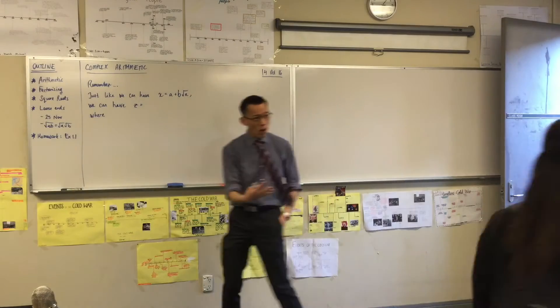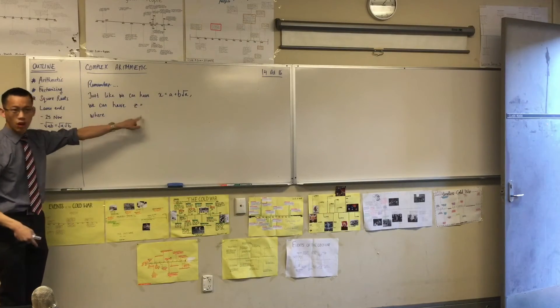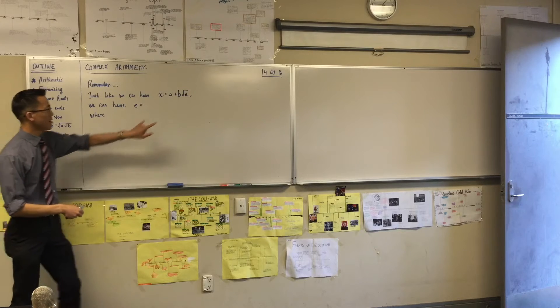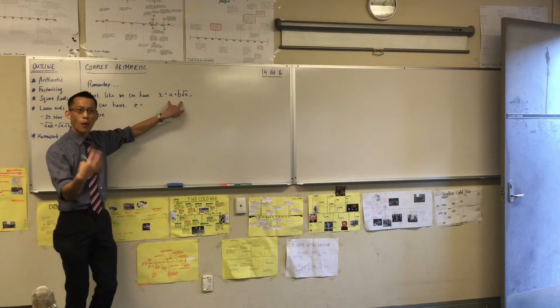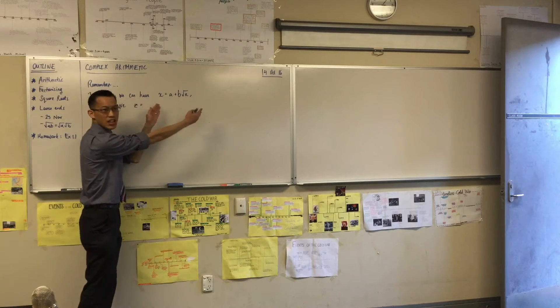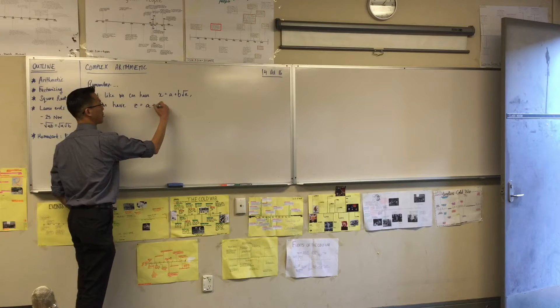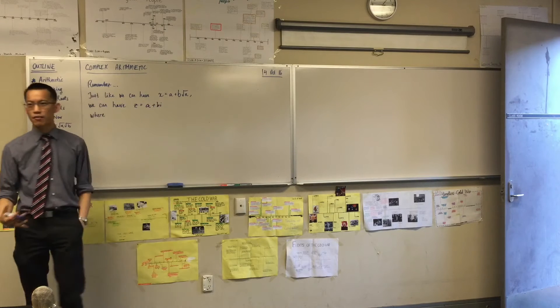And in the same way, just like with these irrational numbers, we can write complex numbers as this sort of, I call it like this oil and water mixture. Like these guys kind of stay separate, right? So I said something like this. This is a classic way of writing a complex number.